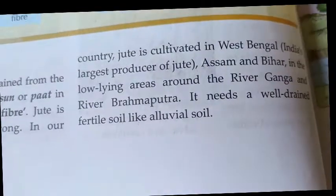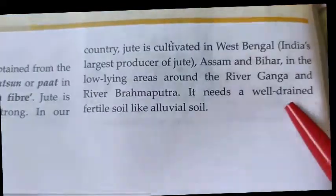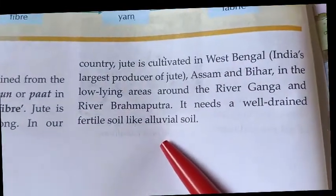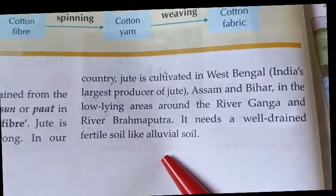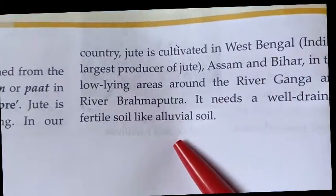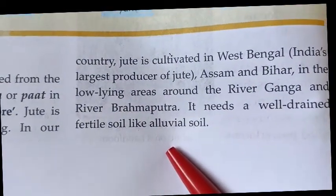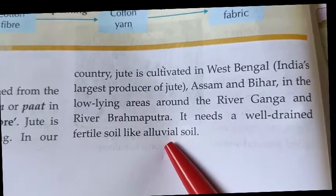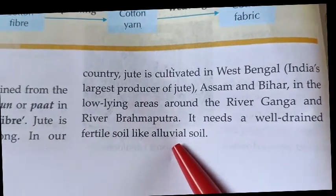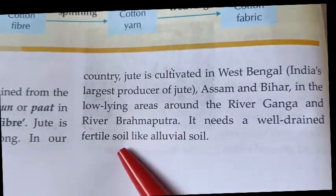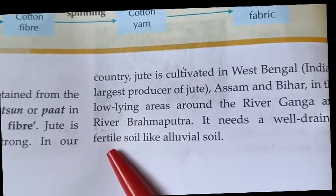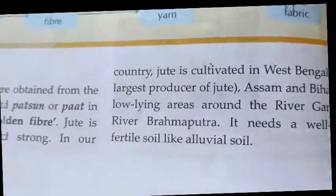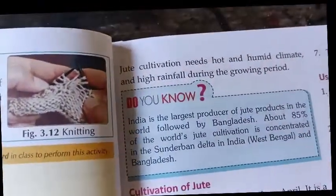For soil requirements, jute needs well-drained fertile soil, like alluvial soil. 'Well-drained' means the soil can hold enough air and water, and water can easily drain out from it.